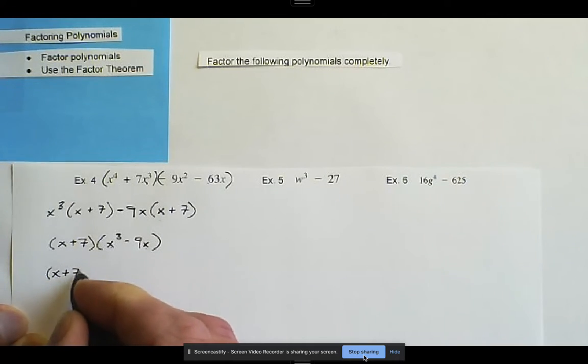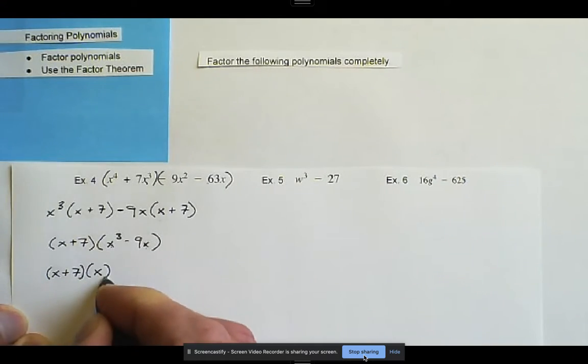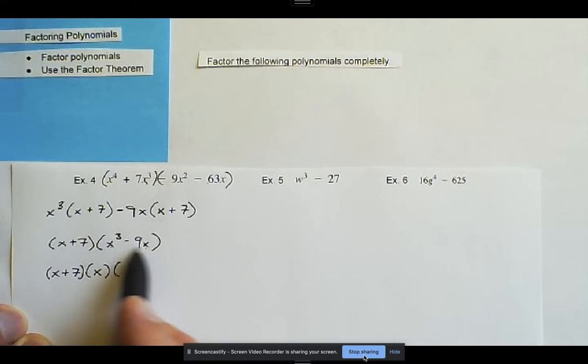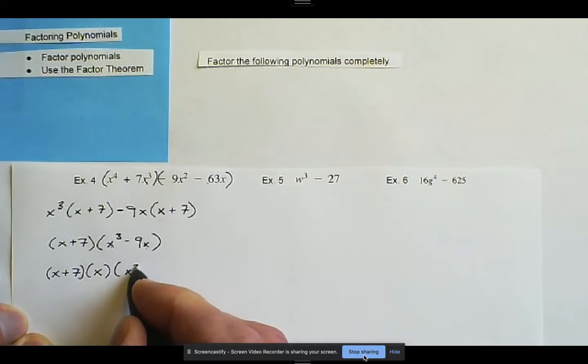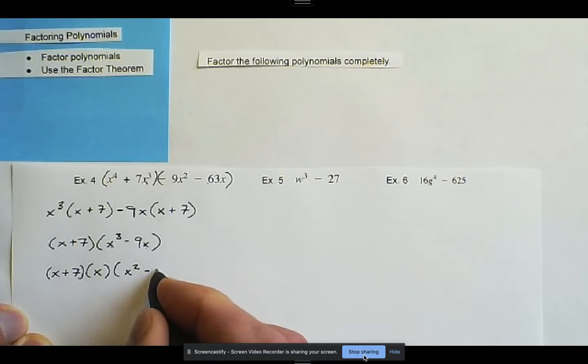So x plus seven, then we can factor out that x, and once we factor out an x on that second binomial, we're left with x squared minus nine.